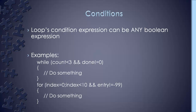A loop's condition expression can be any boolean expression. For example: while count is less than 3 AND done does not equal 0, keep doing it. Or with a for loop: for index equals 0, as long as index is less than 10 AND entry is not equal to minus 99, do this. Loops run as long as the boolean expression is true, and as soon as it becomes false, the loop stops and execution moves on to the rest of the code.